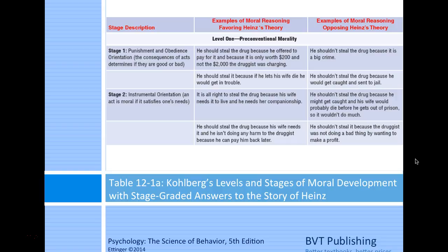Stage one is punishment and obedience orientation—the consequences of acts determine if they are good or bad. Stage two is instrumental orientation—an act is moral if it satisfies one's needs. Looking at stage one with the Heinz dilemma: in favor, he should steal the drug because he offered to pay and it's only worth $200, not $2,000; or he should steal it because if his wife dies he would get in trouble.